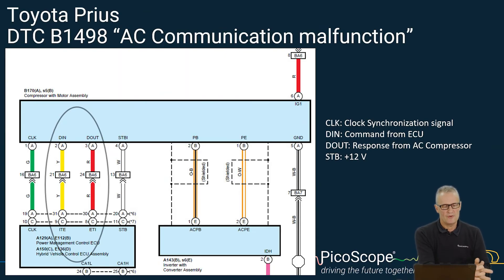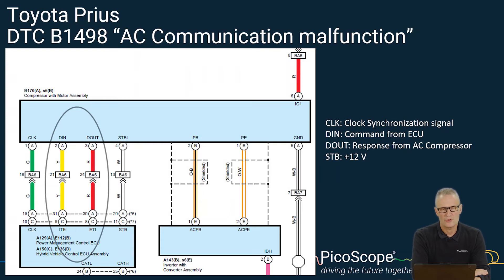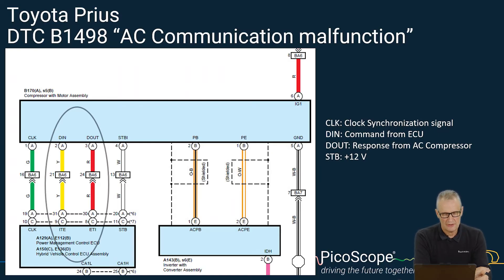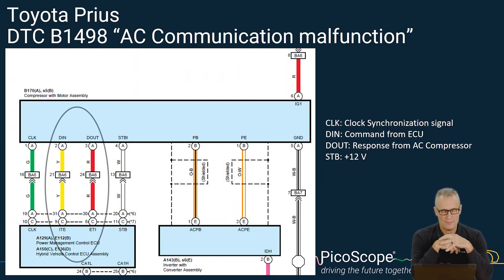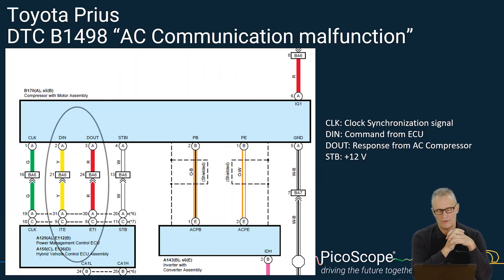Alright, let's move on to the Toyota Prius. This had a DTC for B1498 — AC communication malfunction. Just have a look at how this air conditioning system works. This vehicle had been in an accident repair; the vehicle had been repaired but there was this communication fault and no operation of the air conditioning compressor.